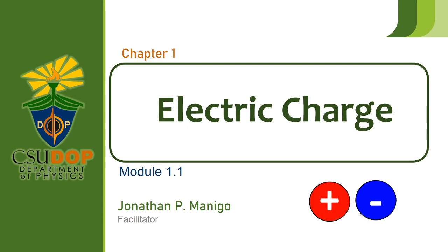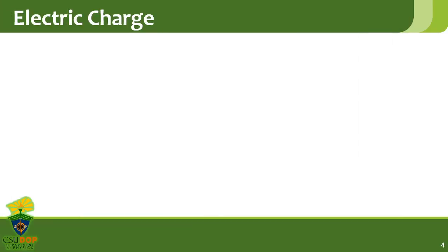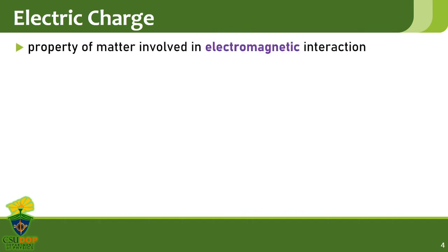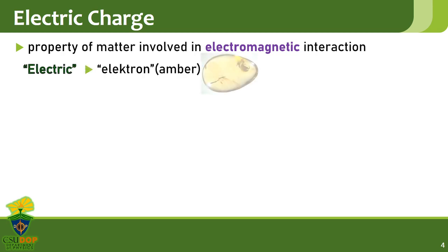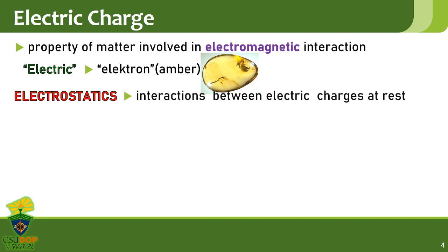Electric charge is the property of matter involved in electromagnetic interaction. It is one of the fundamental properties of matter, together with length, mass, and time. The word electric comes from the Greek word for amber, which is electron. Ancient Greeks used to rub things with amber and found out that some things attract and repel after rubbing. The first part of this course will focus only on electrostatics, which deals with interactions between charges at rest.